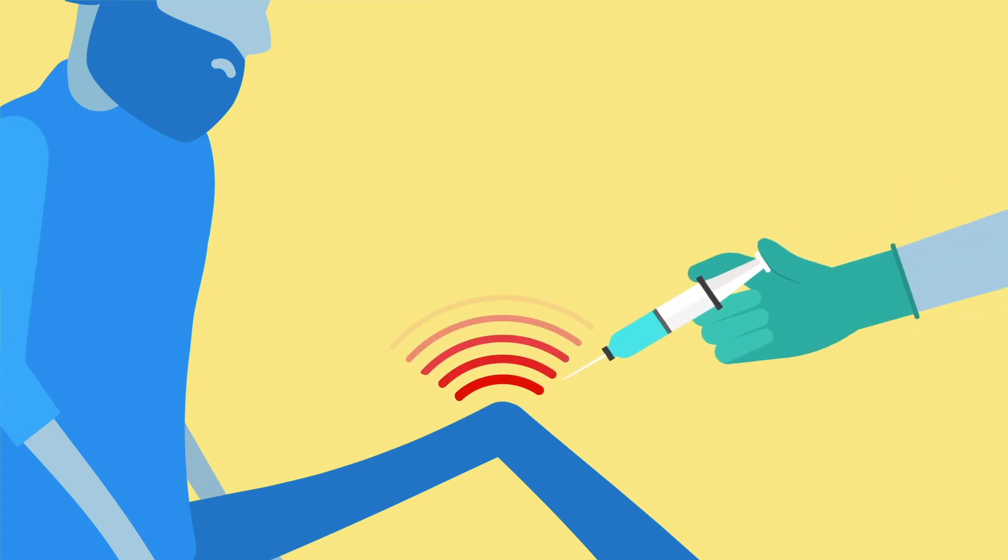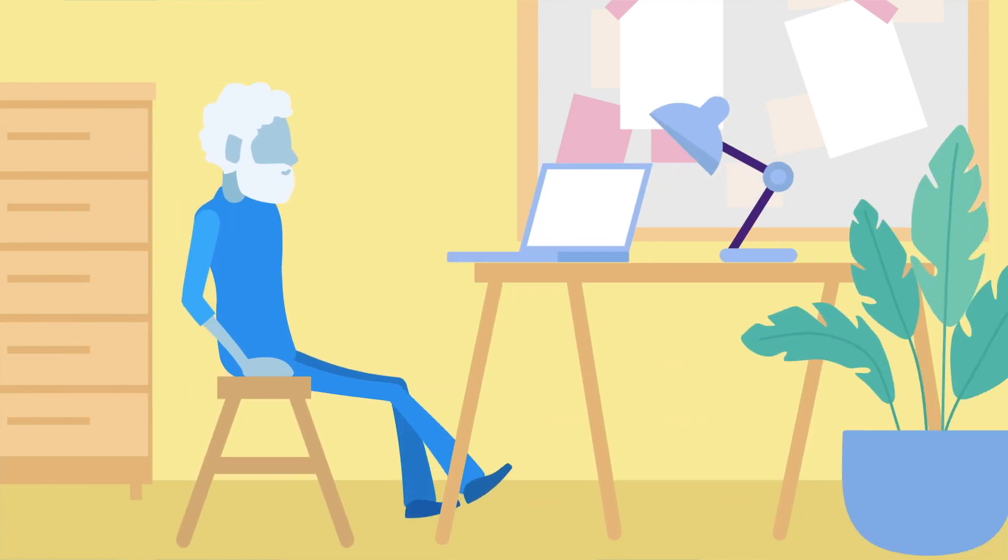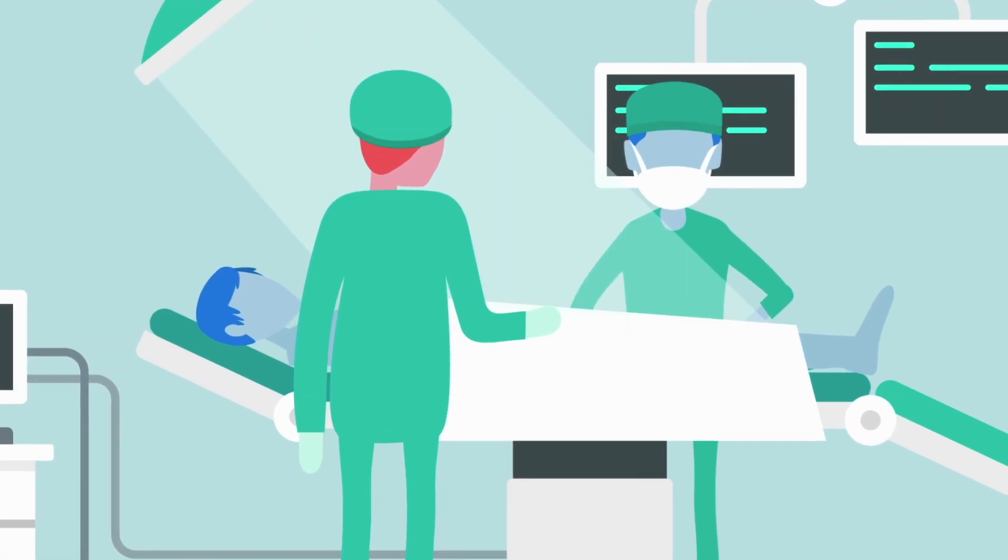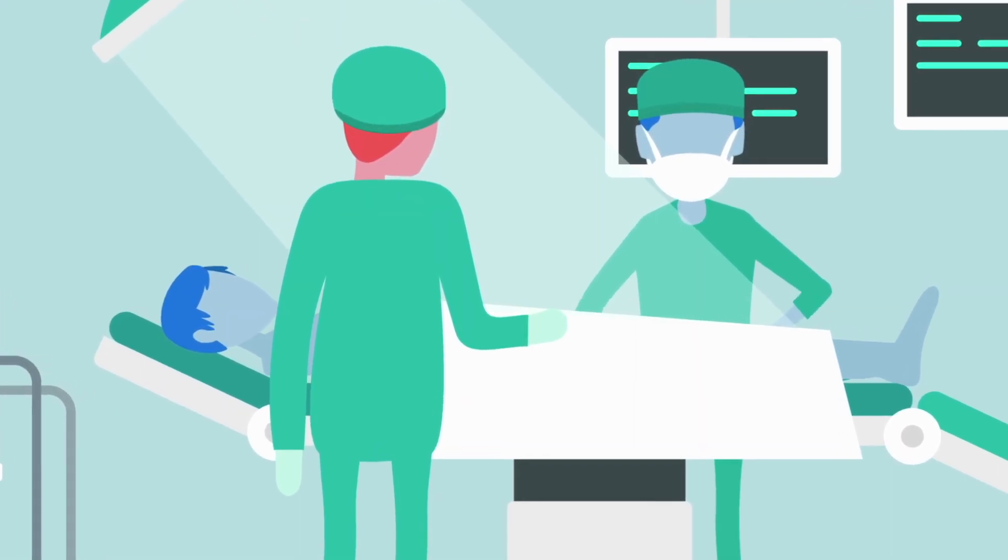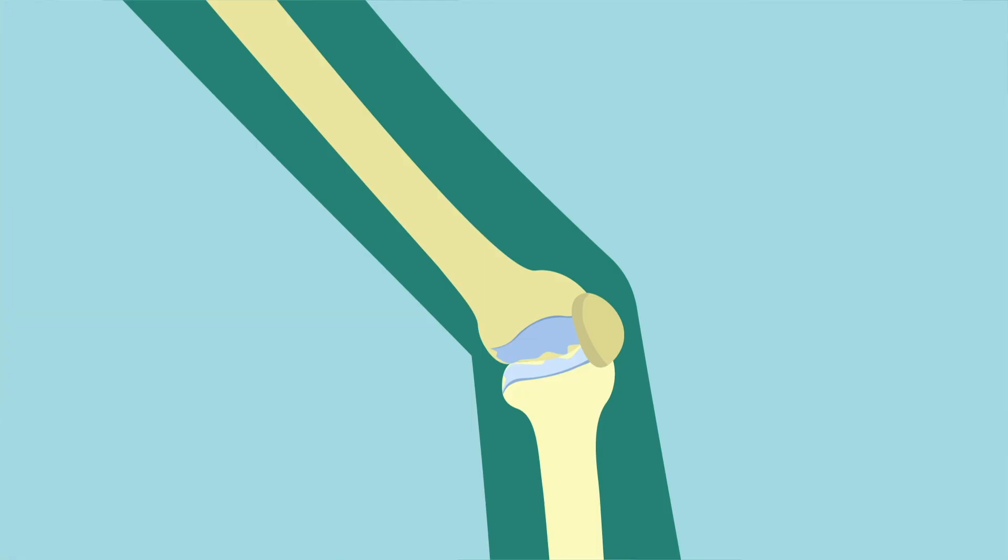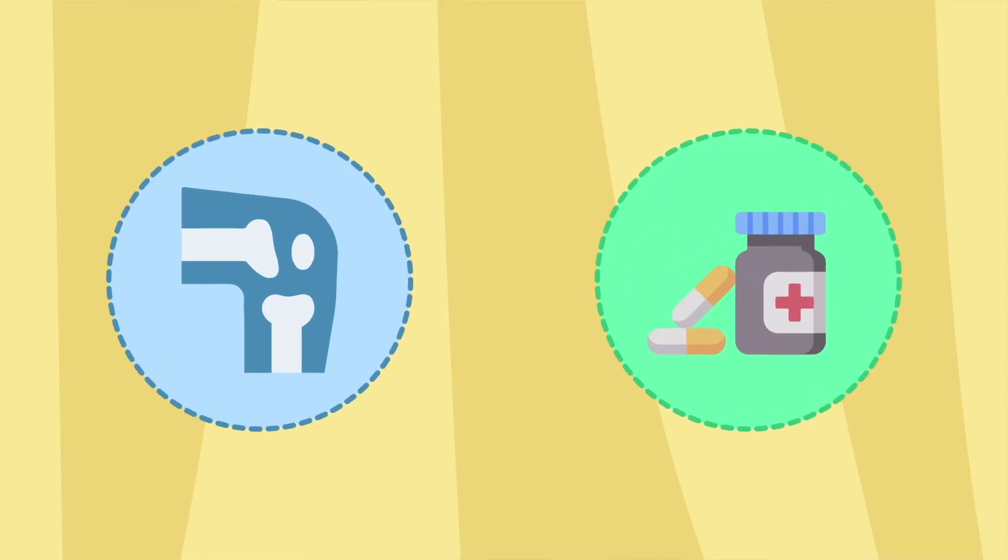Another way to treat pain is by injecting steroid medicine in the joint. This may improve pain for a few months and can be repeated several times if it is helpful. In severe cases that are not improving with treatments, doctors may suggest joint replacement surgery. The end parts of the bone are removed and replaced with metal parts. After such surgery, patients will need pain medicines and physical therapy to get back to normal activities.